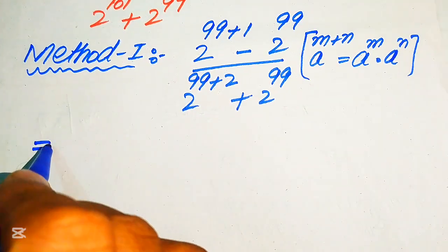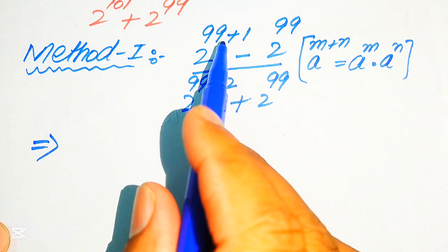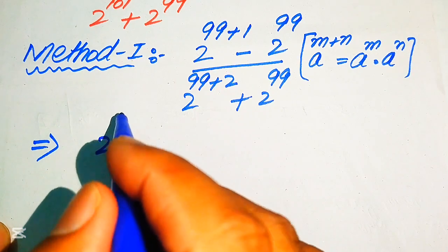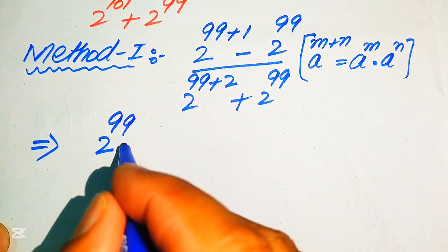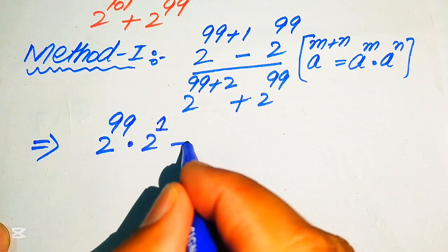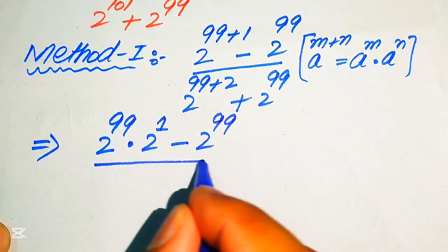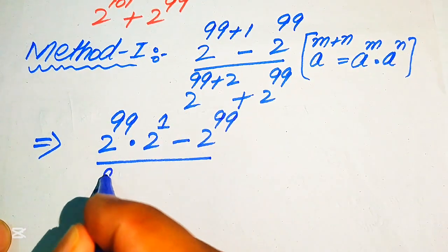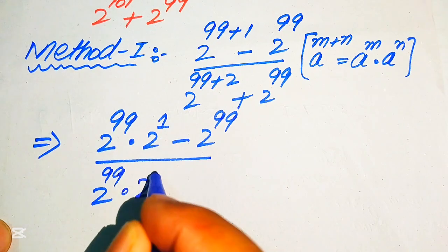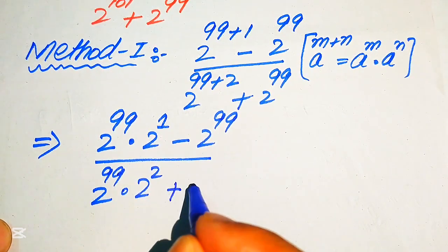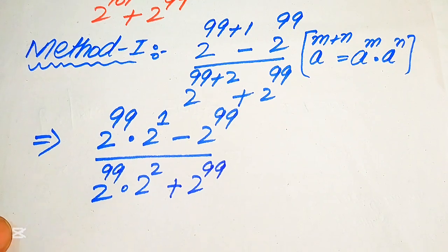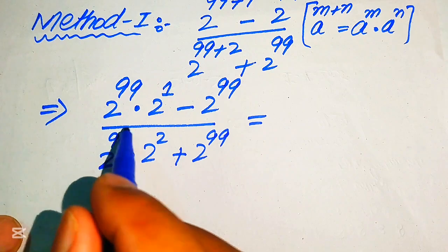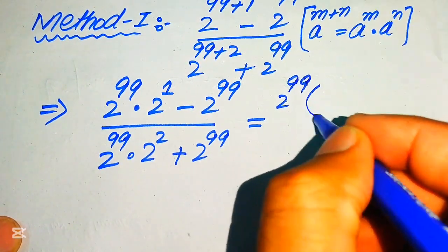We break these exponents and write the two terms separately in base 2. It will be written as 2 to the power of 99 multiplied by 2 to the power of 1, minus 2 to the power of 99, divided by the expanded denominator. Applying the exponent law again, we write 2 to the power of 99 times 2 squared, plus 2 to the power of 99. On both numerator and denominator, 2 to the power of 99 is the common term.